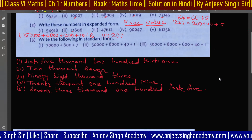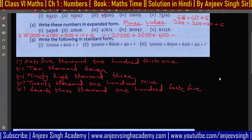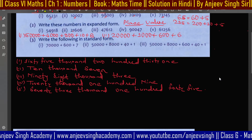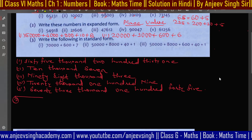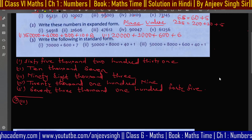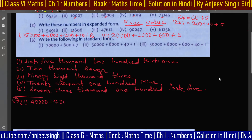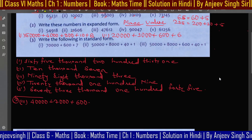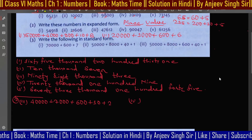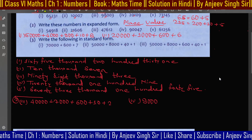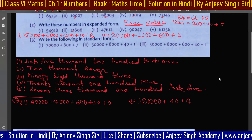For the second question: 20,000 + 1,000 + 600 — you can write the zeros or ignore them, just write 600. For question number 3, which is 47,612: 40,000 + 7,000 + 600 + 10 + 2. Very good!